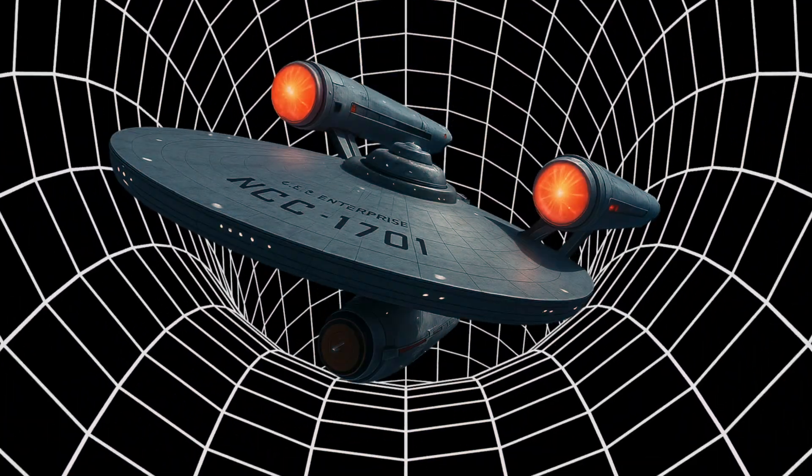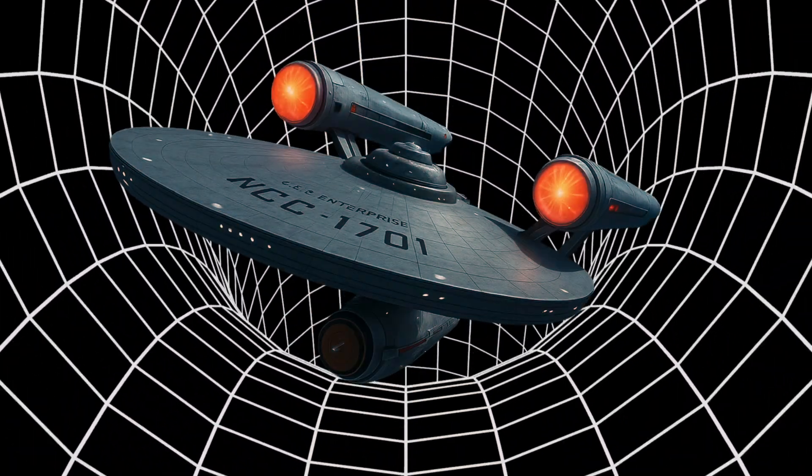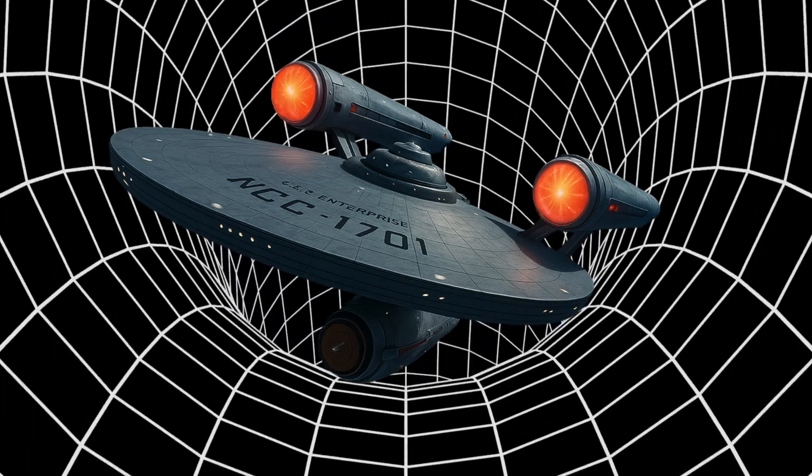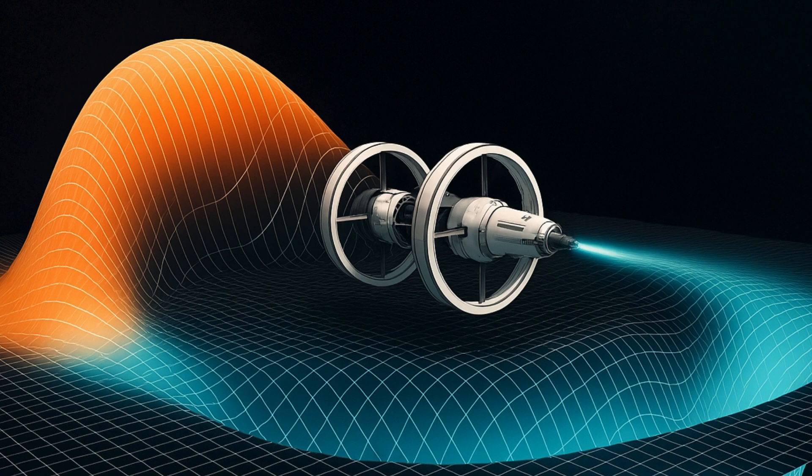That's what a warp drive aims to do: not to move the ship, but to fold space to bring the destination closer. The ship itself can remain still, like the ant. But if space-time moves, it looks and behaves as if the ship is moving faster than light.